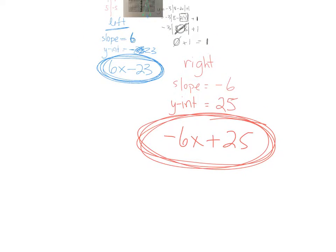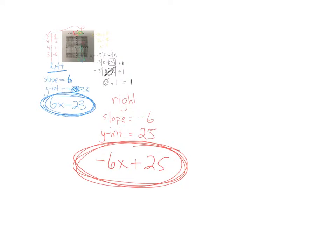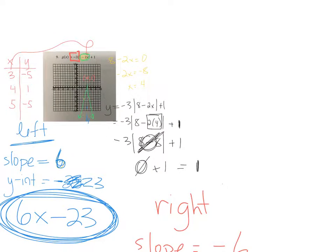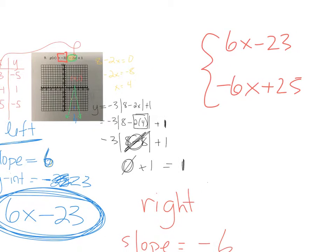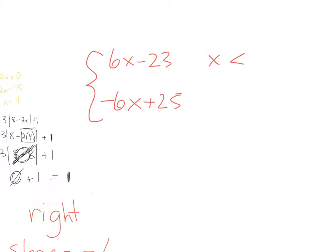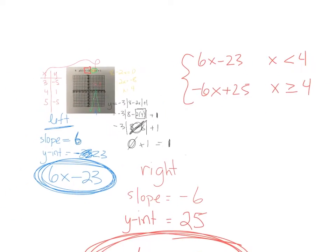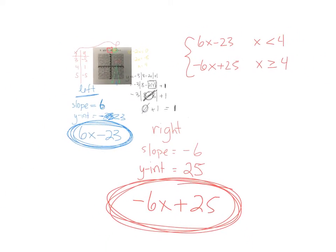Now as a piecewise, we of course would be squishing these two equations together. Your left equation, 6x minus 23, and your right equation, negative 6x plus 25. And the dividing line is positive 4. So that's probably the easy part, because that's the x-coordinate of your vertex.